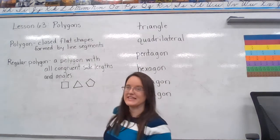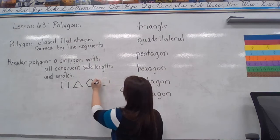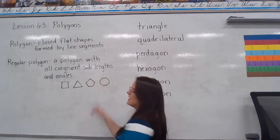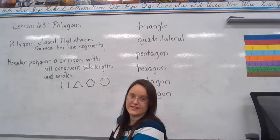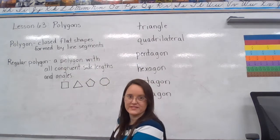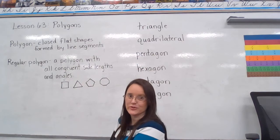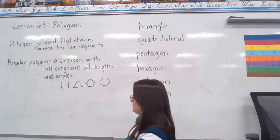Think of a stop sign. A stop sign is a regular octagon. All the sides and all the angles are congruent — same size, same shape.